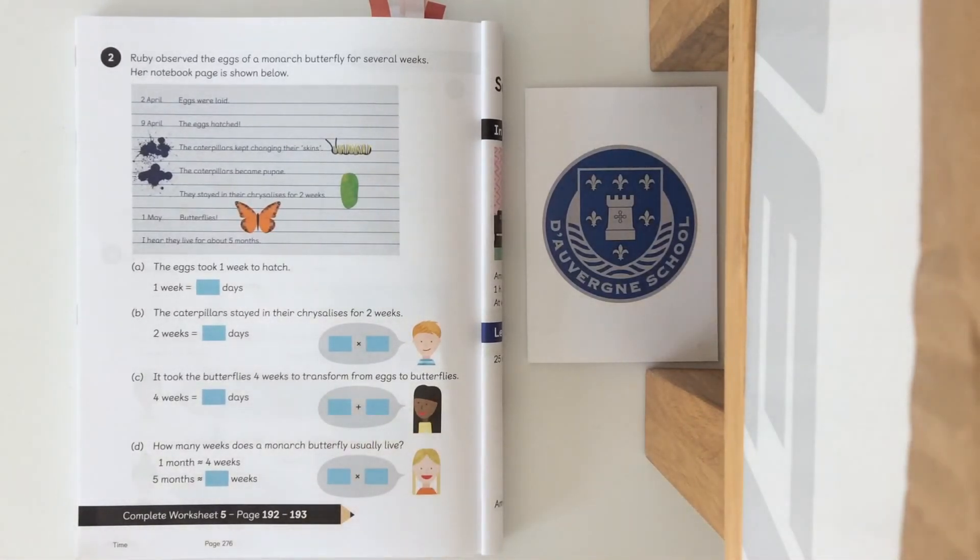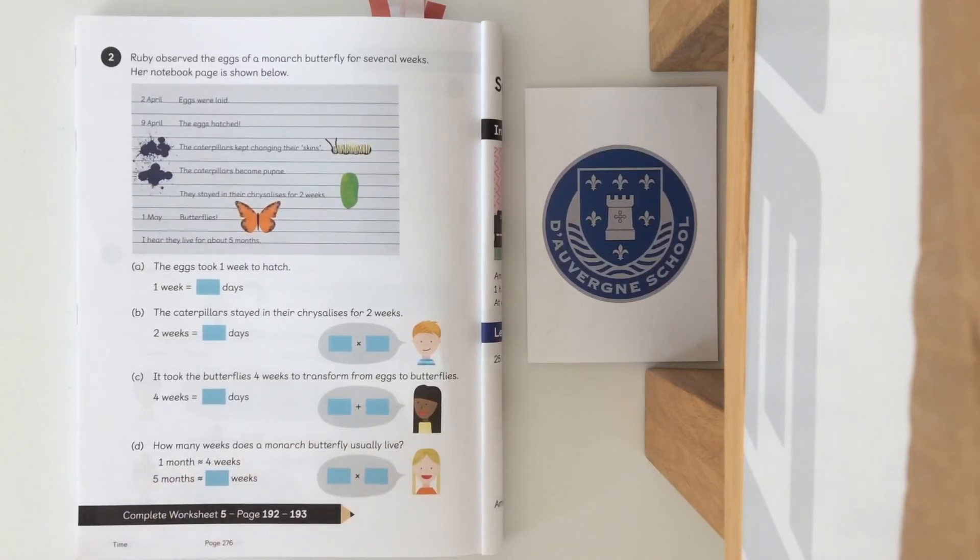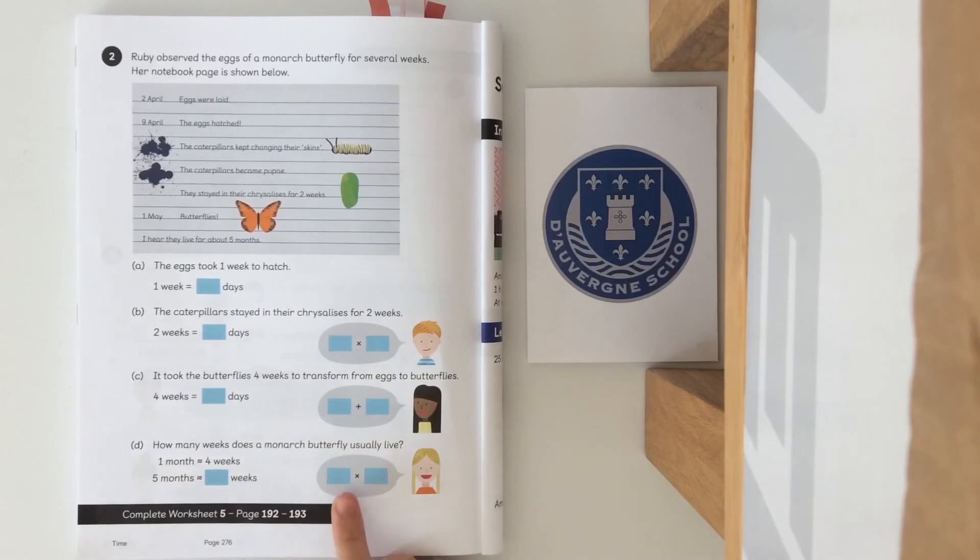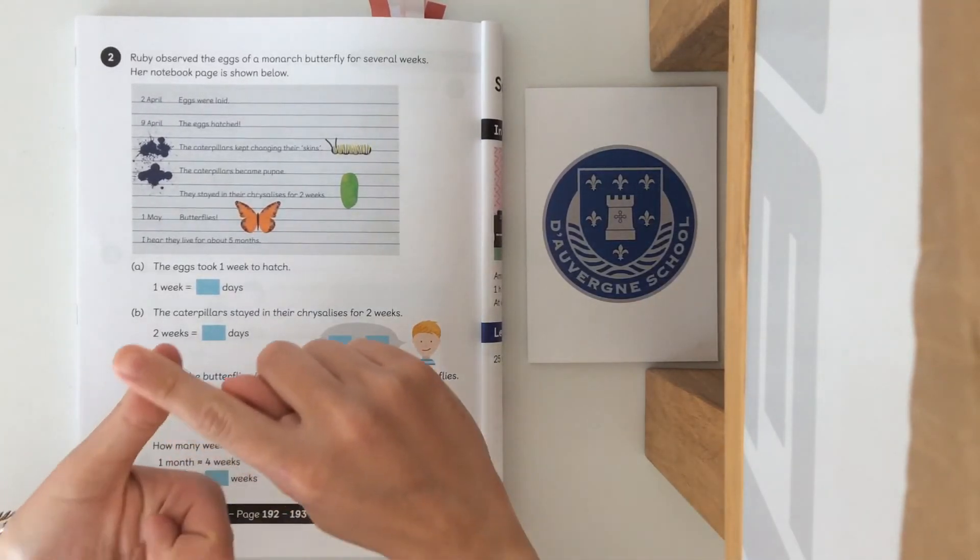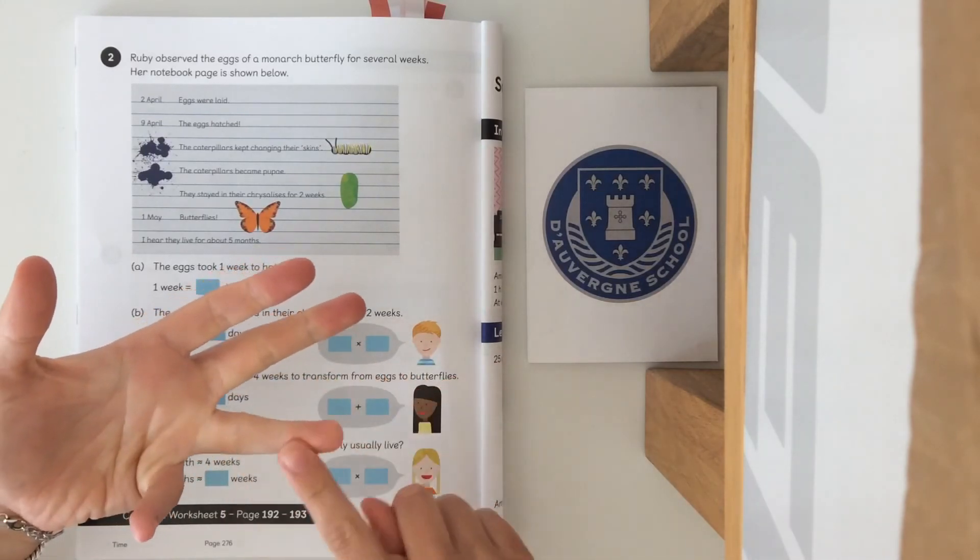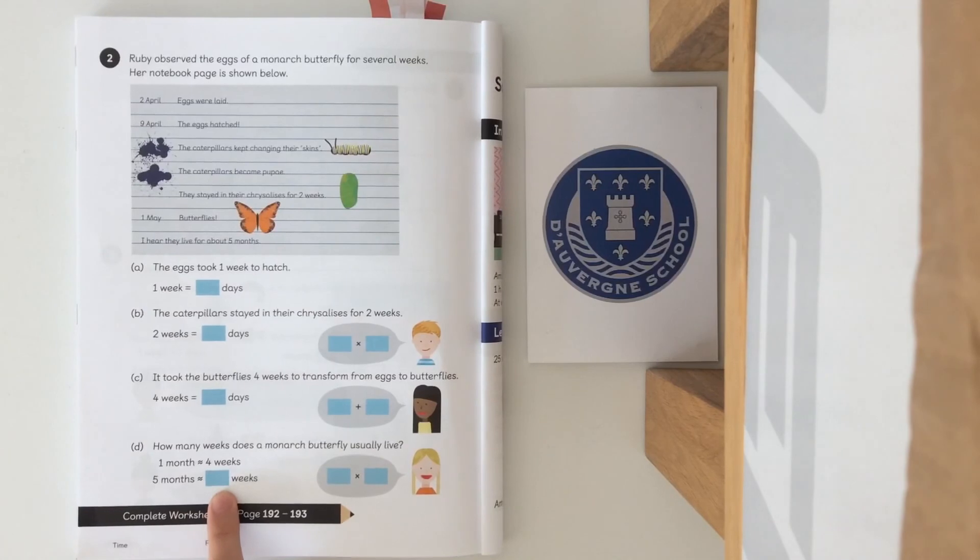And question D: five months is the same as... We have to do five times four, so five groups of four weeks, or four times five with commutativity. So we're going to do five, ten, fifteen, twenty. Five months is the same as twenty weeks.